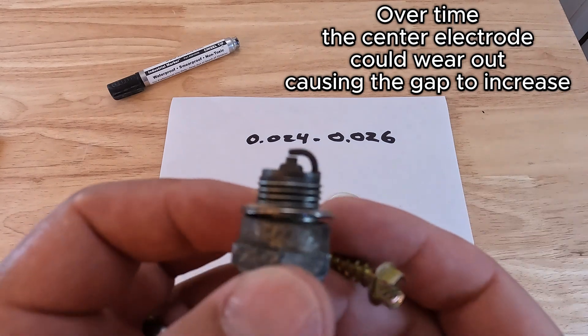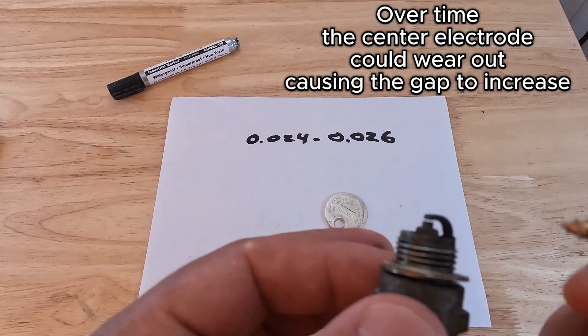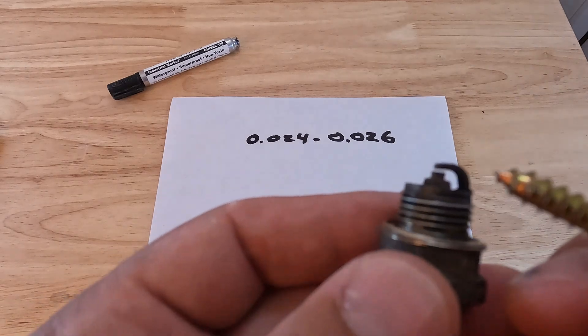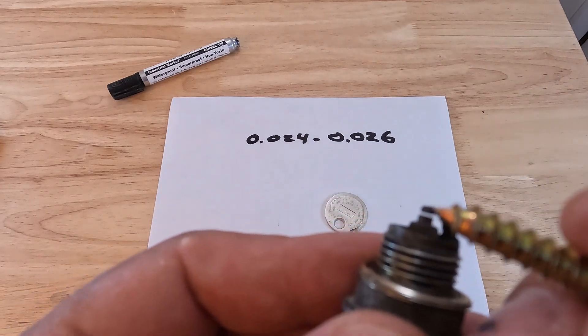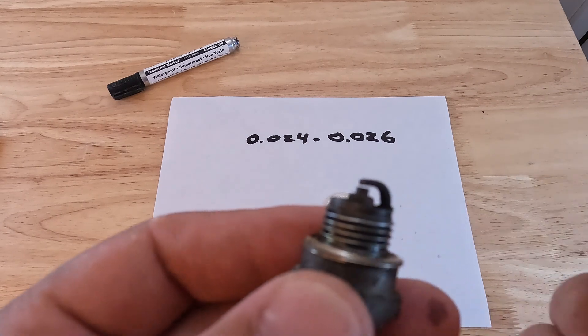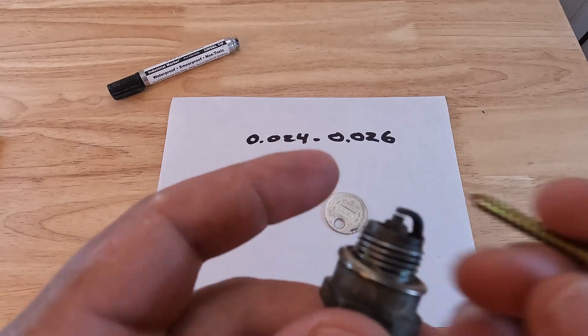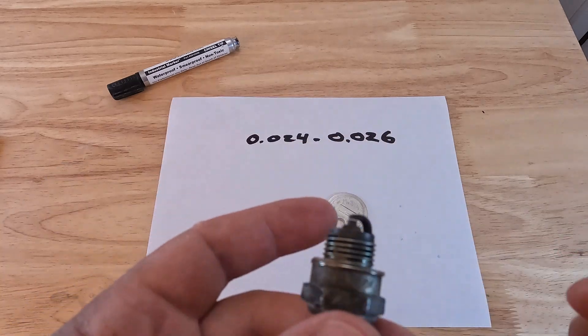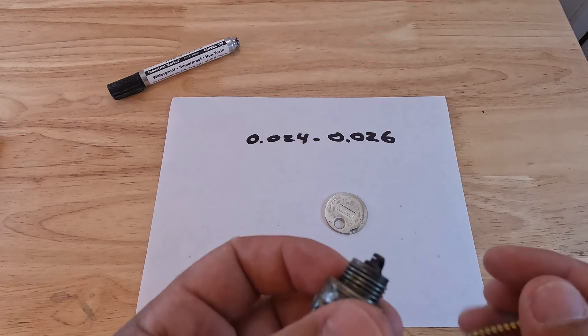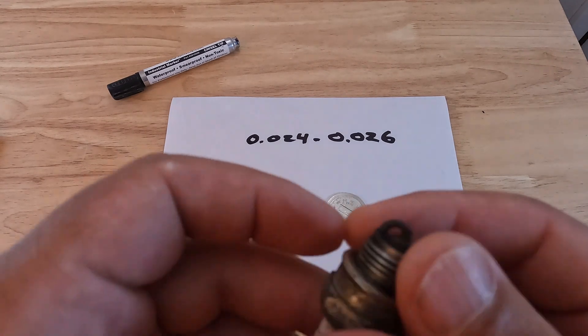If the gap is too small, then that arc might also not be strong enough to ignite the air and fuel mixture, and that's also going to cause rough idling or your car could stall out. There's a whole host of issues.